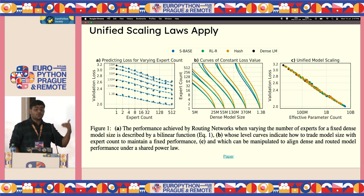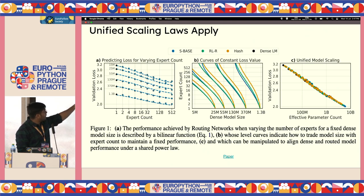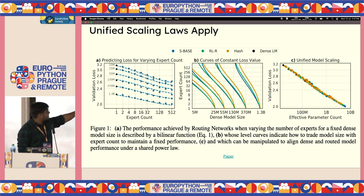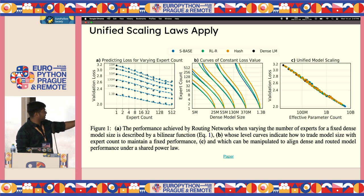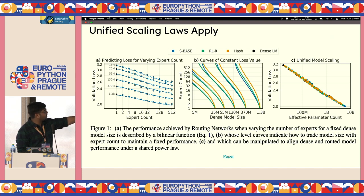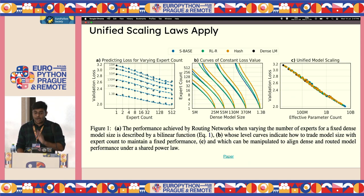Unified scaling laws also apply to mixture of experts. As the number of experts increases, validation loss keeps decreasing — whether for 1.3 billion, 370 million, or 130 million parameter models. On a second curve, for models of different dimensions, increasing the expert count consistently improves performance. These scaling laws apply, which is why mixture of experts is used to increase the scale of these models.